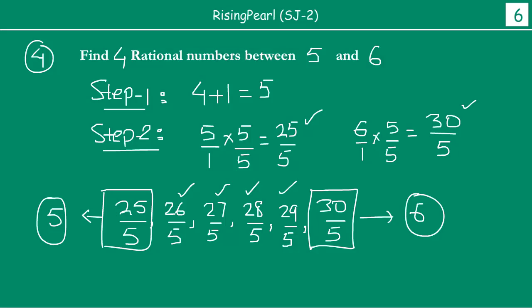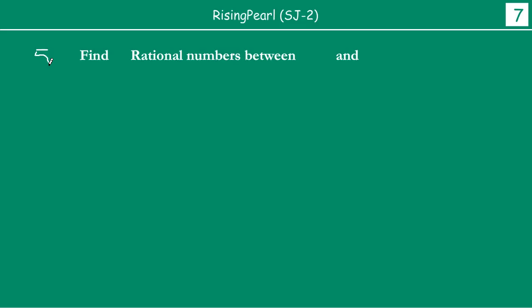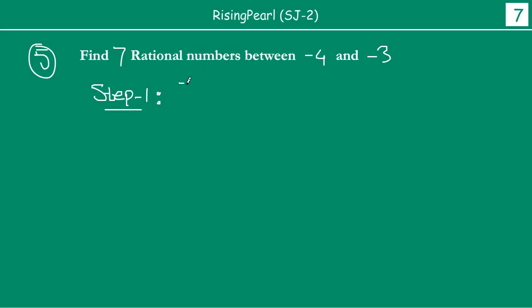चलिए दोस्तों, now we will take our final example in this presentation. यह है हमारी example number 5, and this time we want to find out 7 rational numbers between minus 4 and minus 3. So, again, we will start with step 1. Step 1 tells us: कितने numbers चाहिए उन्हें लिखो, उनके साथ एक add कीजिए. So, 7 plus 1 is 8.